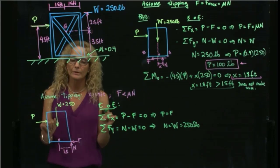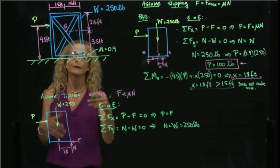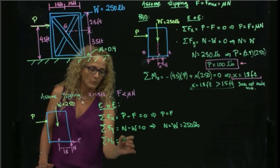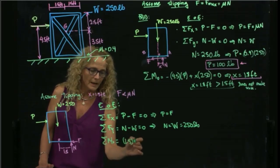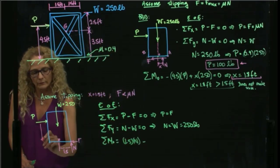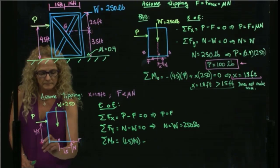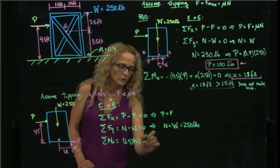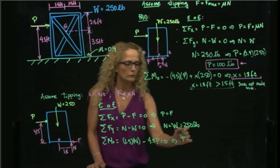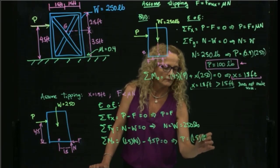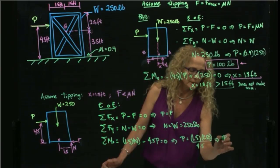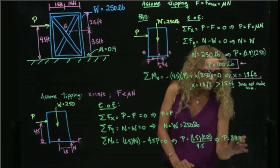Now, F and N are not related because they are less than, but I don't know how much less, so I take moment at O and I find that 1.5 N minus, and this distance over here is 4.5, so minus 4.5 P is equal to 0, so P here is equal to 1.5 times 250 over 4.5. So, the value of P is now 83.3 pounds,